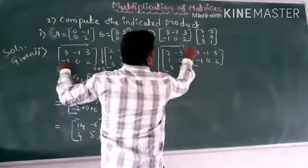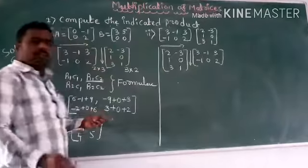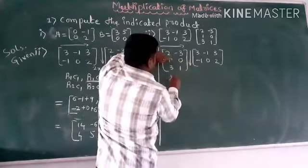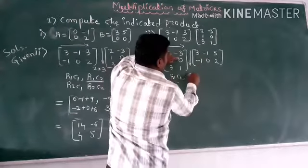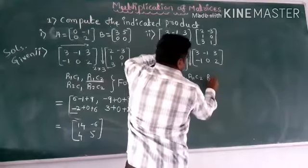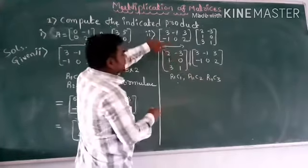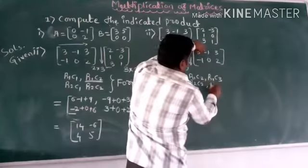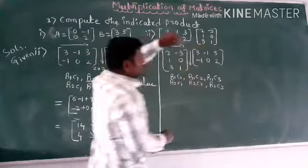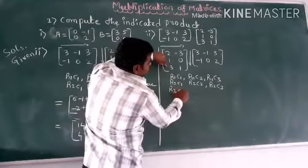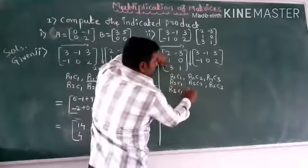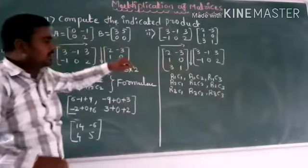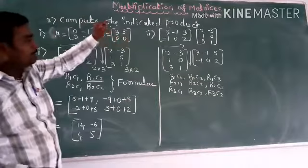I will take both AB and BA to see if they are equal — to check the commutative law. The structure is: first row first column (R1C1), first row second column (R1C2), second row second column (R2C2), second row third column (R2C3), third row first column (R3C1), R3C2, R3C3.